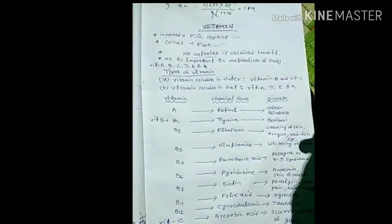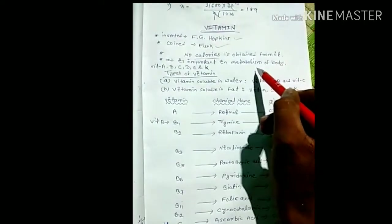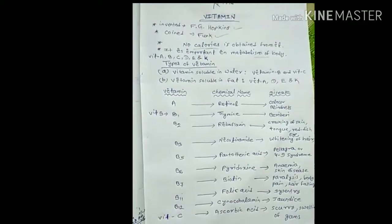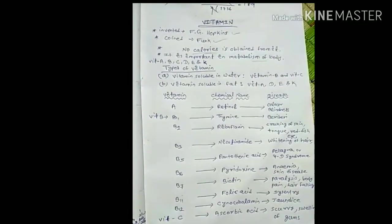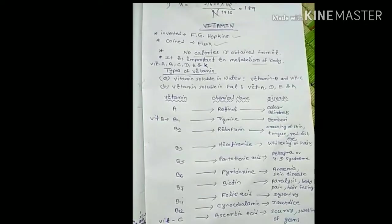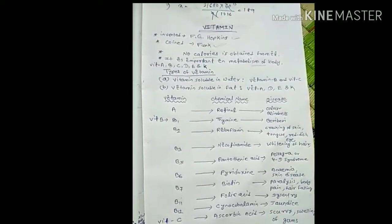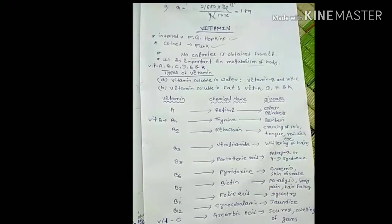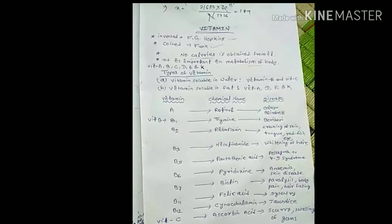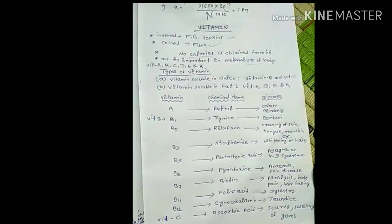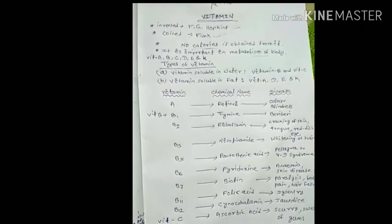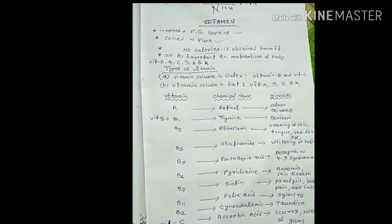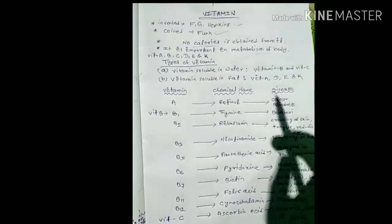Vitamins are important in body metabolism. Metabolism means the anabolism and catabolism process that takes place in our body - the production of energy and new things takes place in anabolism, and breakdown of food particles takes place in catabolism.